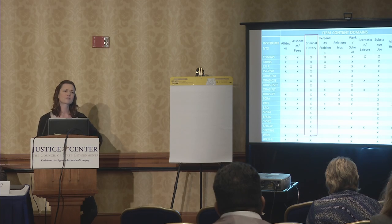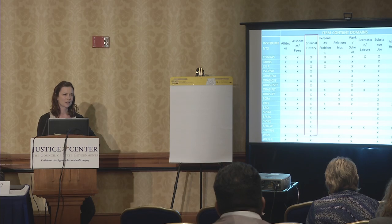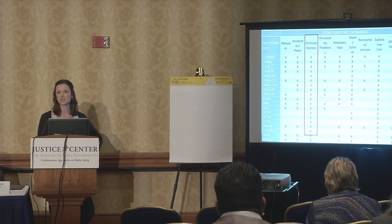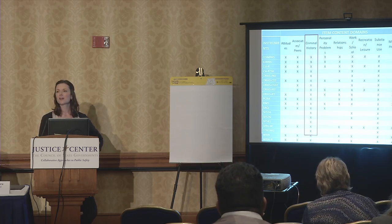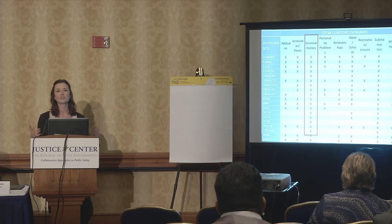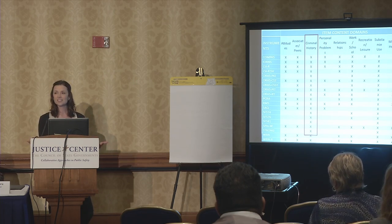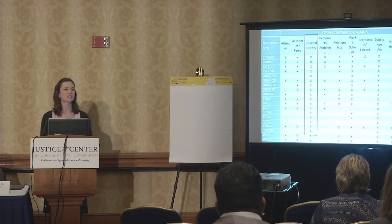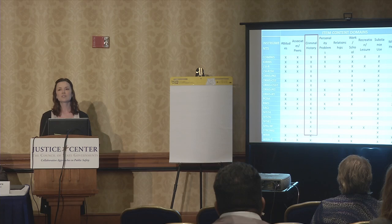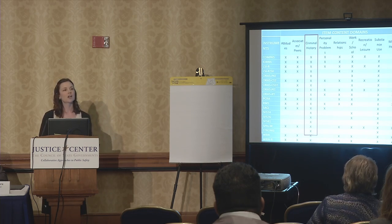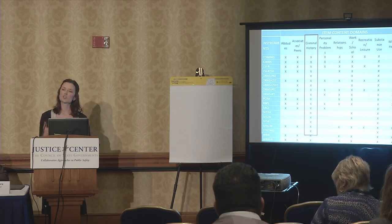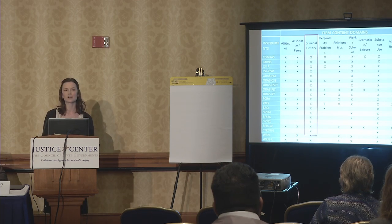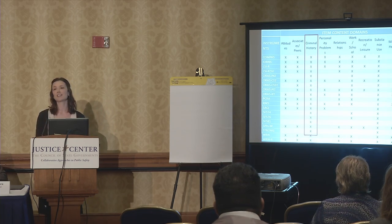This is a problem for us to wrap our heads around because criminal history is also the most robust predictor of future behavior. That old quote — past behavior is the best predictor of future behavior — statistically, this is true. So when we're talking about putting together an evidence-based, statistically supported instrument, do we say we're going to pull that out and not make any use of it when we know that it accounts for so much of the variance in future behavior? It's a thought problem, and I don't have the answer to it.